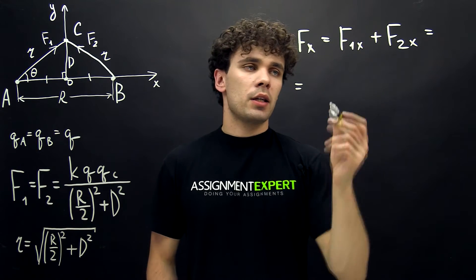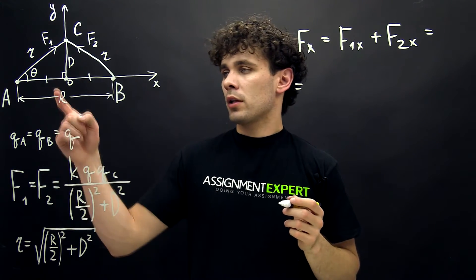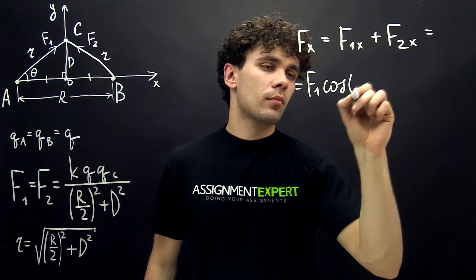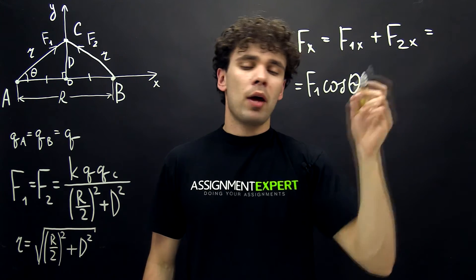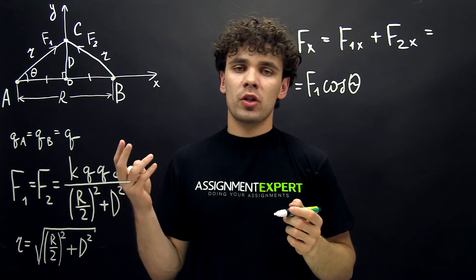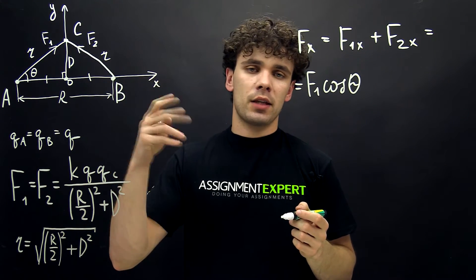In our case, F1x is F1 times cosine theta. F2x: the direction of the force F2 is opposite to the direction of the axis X, so we will have negative F2 times cosine theta.